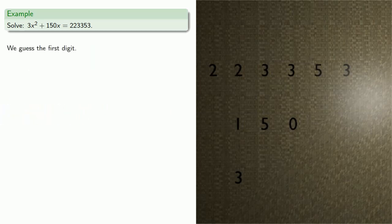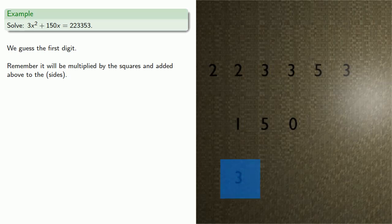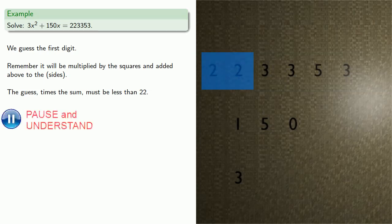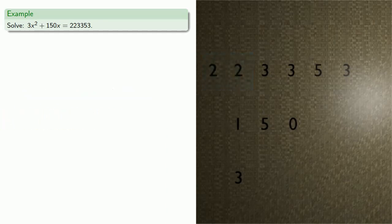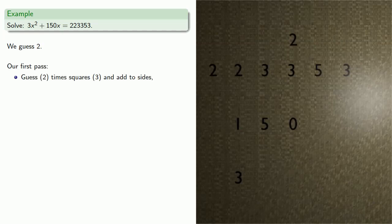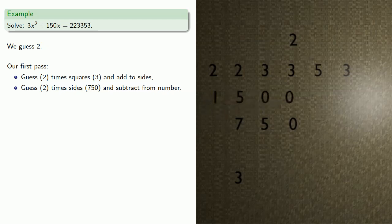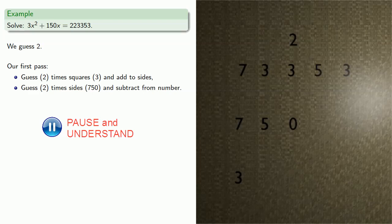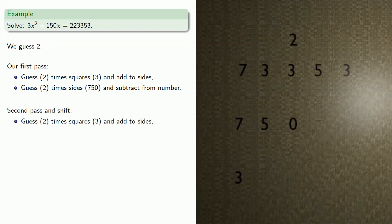We guess the first digit — remember it will be multiplied by the squares and added to the sides. And since we'll have to subtract it, the guess times the sum must be less than 22. So we guess 2. On our first pass, guess 2 times the squares (3) and add to the sides. Then guess 2 times the sides (750) and subtract from the number. On our second pass, guess 2 times the squares and add to the sides, and shift. The sides shift one place and the squares shift two.